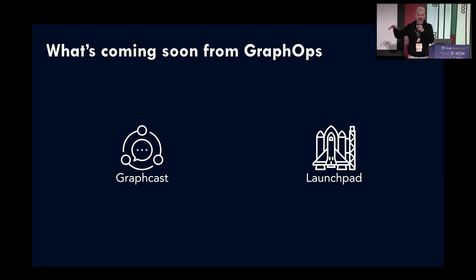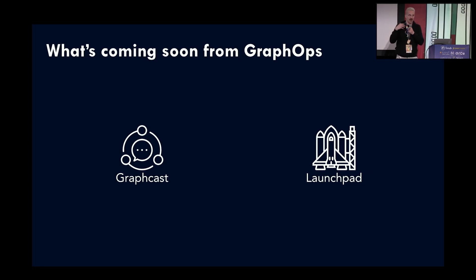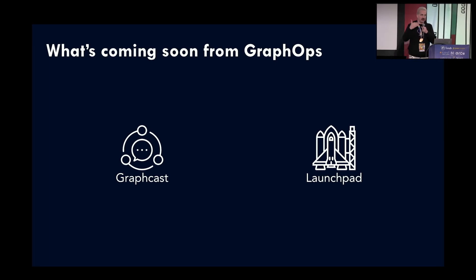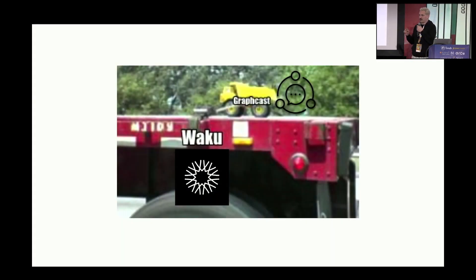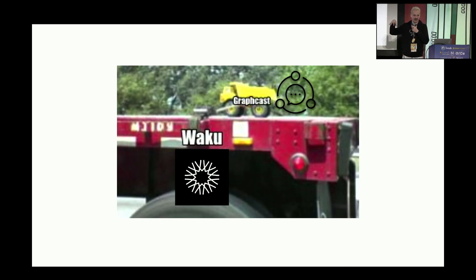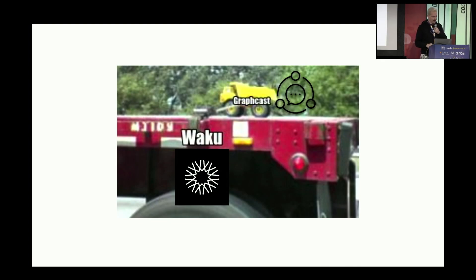Graph Ops works on two cool things: GraphCast, a way for indexers to communicate in a gossip network with each other — sharing what data they've seen and the latest updates — and the Launchpad, a Kubernetes configuration to quickly launch an indexer on the decentralized network. GraphCast builds on top of Waku, the gossip network from the Ethereum ecosystem.